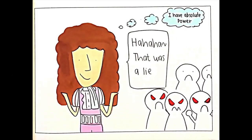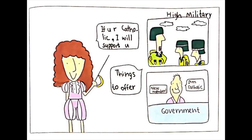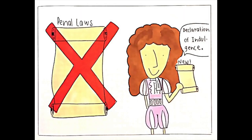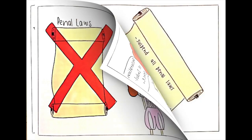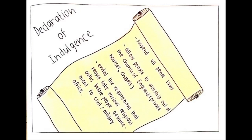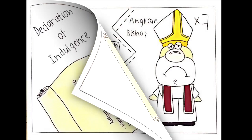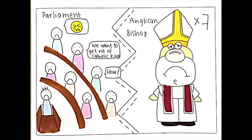However, things didn't go that way. James then used the royal dispensing power to suspend the limitations and appointed his Catholic supporters to high military and governmental positions. After that, he distributed a Declaration of Indulgence, which suspended all penal laws, allowed people to worship outside the Church of England in private houses or chapels, and ended the requirement that people take religious oaths before advancing to civil or military office. When the Parliament and seven Anglican bishops heard about the Declaration, they began to find a way to get rid of this King.